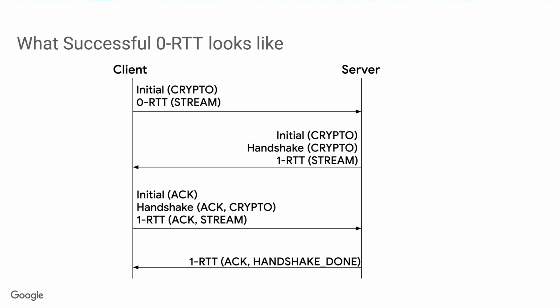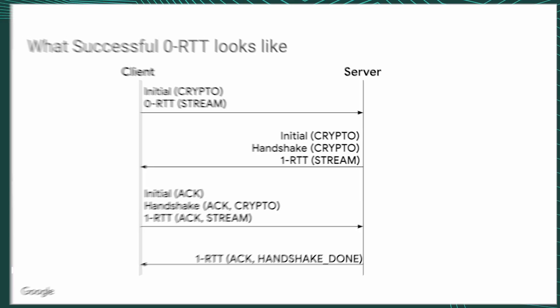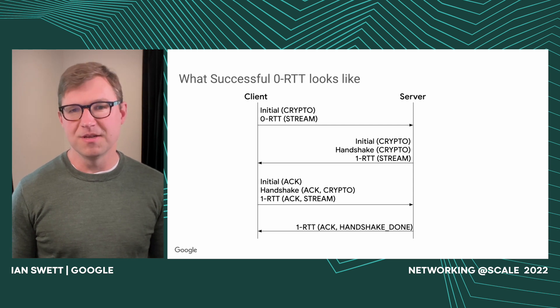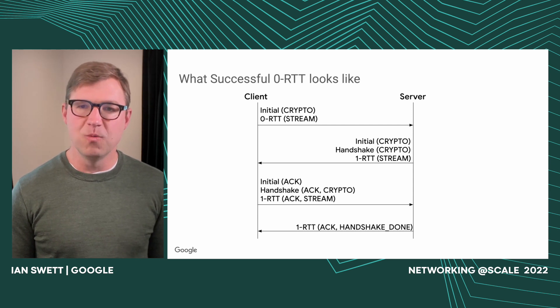Let's take a look at what a successful Zero-RTT handshake looks like. On the left we have the client, on the right we have the server. The client starts by sending an initial and potentially 0-RTT data. The server responds with its initial containing the server hello, handshake data, and 1-RTT data all at once. So at this point, the server could have already responded to the client's 0-RTT data. Then the client has forward secure 1-RTT keys and the handshake completes on the server side one round-trip later.